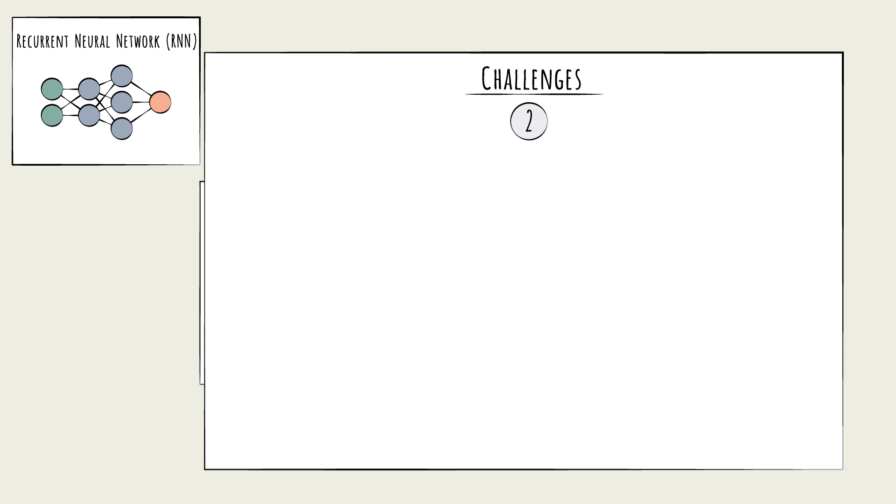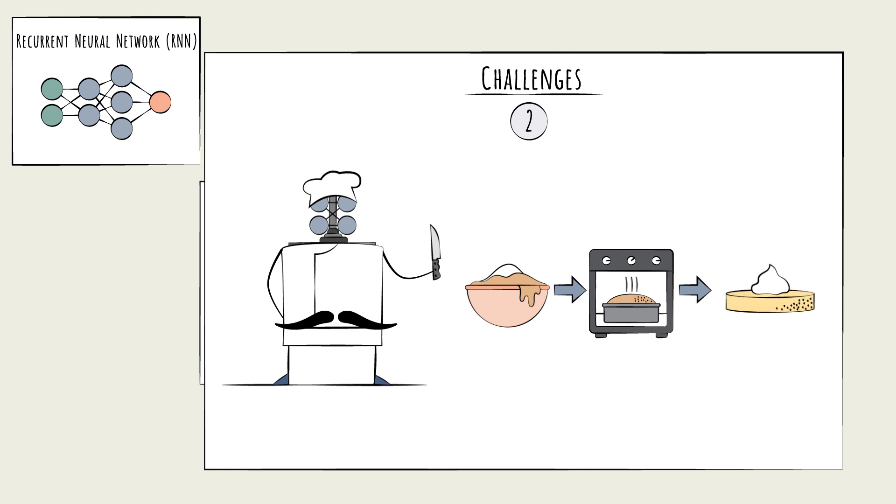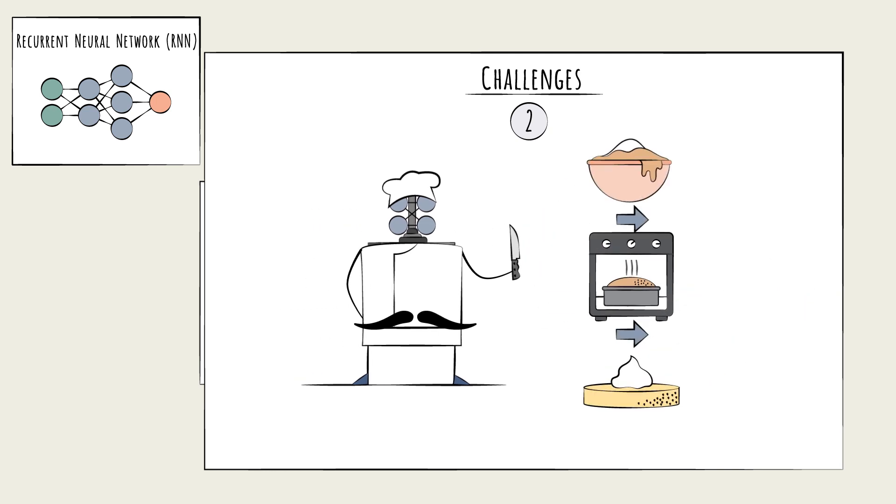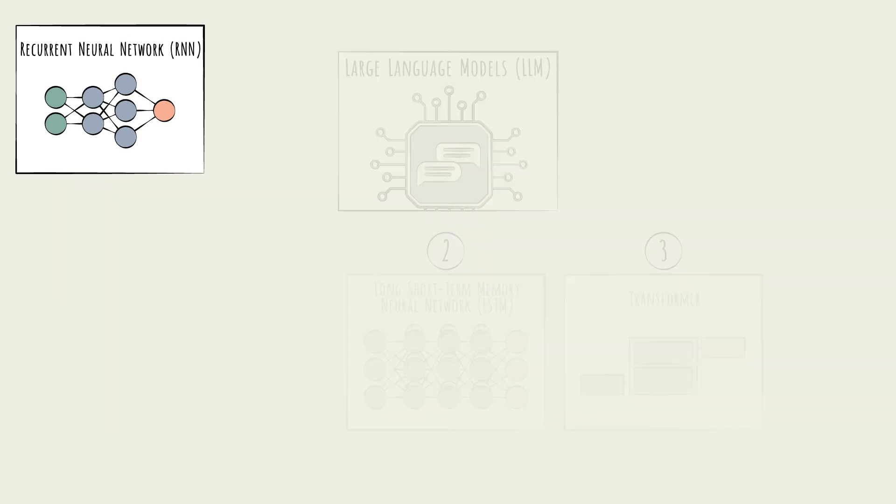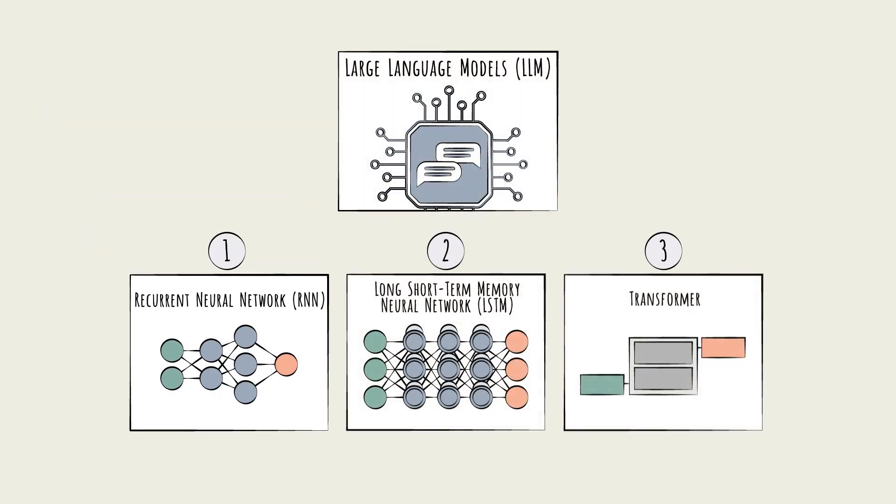A second challenge relates to scalability. The RNN works in sequence. One step cannot begin until the previous is fully completed. There is little opportunity to process in parallel, which makes it slower, especially with long sequences. To overcome these limitations, one of the other two types of neural networks can be used.